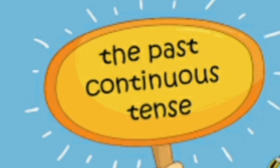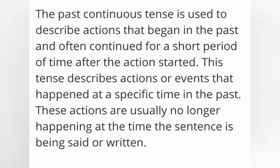The action — what is happening in continuous form? Let's read and try to understand more. The past continuous tense is used to describe actions that began in the past and often continued for a short period of time after the action started. This tense describes actions or events that happened at a specific time in the past. These actions are usually no longer happening at the time the sentence is being said or written.